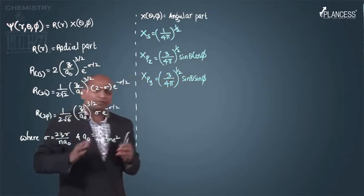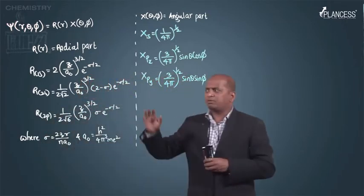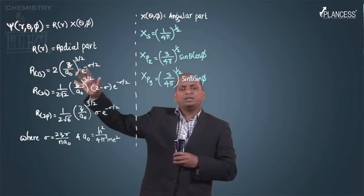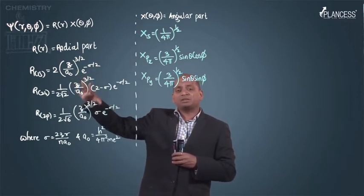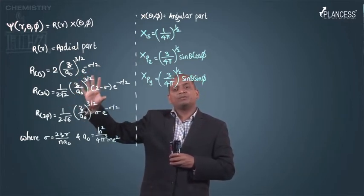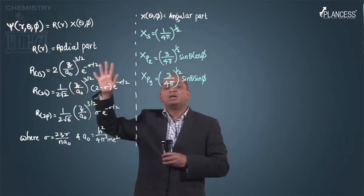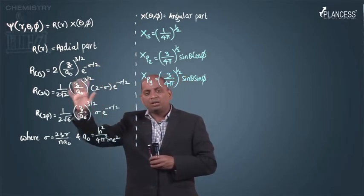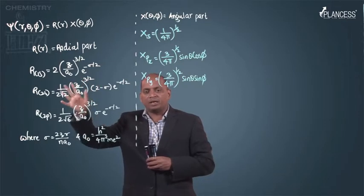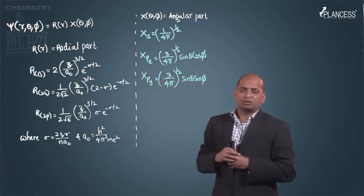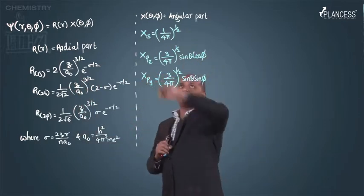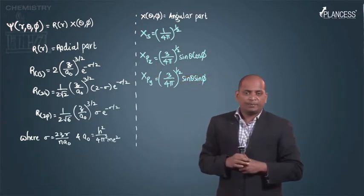These equations - what we have to understand from here is only this thing: such kind of equations are there which will tell us about the orbital, that is probability of finding the electron in a space around the nucleus. X(θ,φ) is called the angular part.